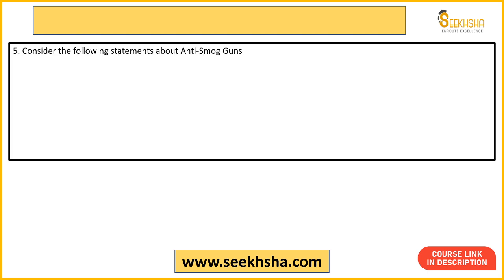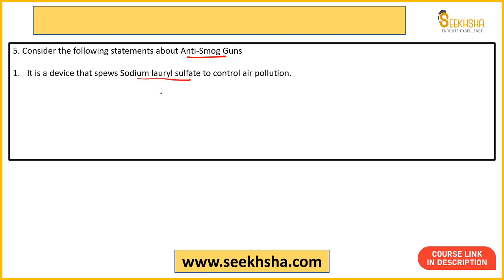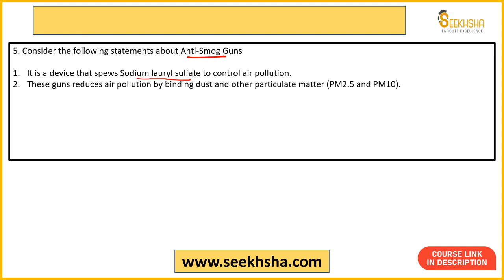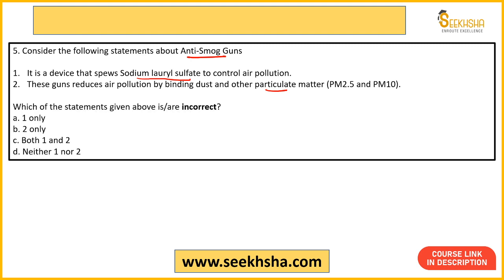Next is the anti-smoke gun question, which was heavily in the news during winter after Diwali 2022. Statement one says it is a device that releases sodium lauryl sulfate to control air pollution. Statement two says these guns reduce air pollution by binding dust and other particulate matter. You need to identify which statement is incorrect. The answer is statement one — statement A is incorrect because sodium lauryl sulfate is a harmful chemical.